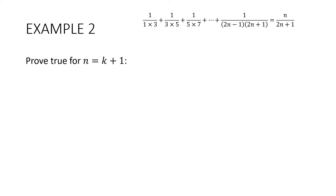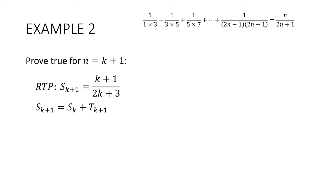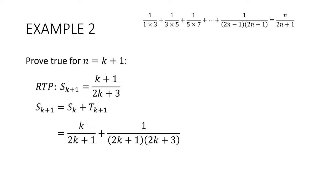Now let's prove it true for n equals k plus 1. I'm going to start with a required to prove statement: the sum of k plus 1 terms must be equal to k plus 1 over 2k plus 3. The sum of k plus 1 terms equals the sum of k terms plus the k plus first term. The sum of k terms is k over 2k plus 1 (our assumption). The k plus first term comes from substituting k plus 1 into the nth term formula, giving 1 over 2k plus 1 times 2k plus 3. How do I get to the required result? I can see the 2k plus 3 — I need one on the other side.